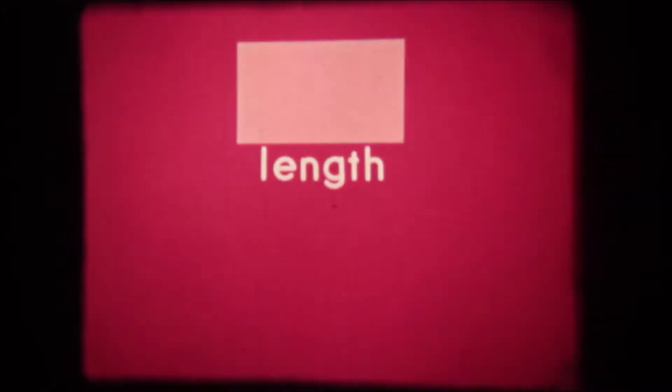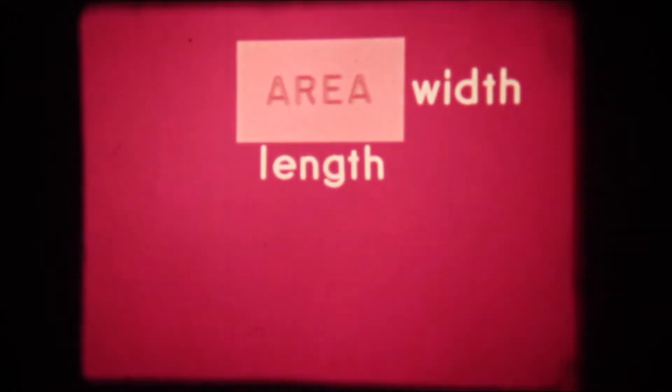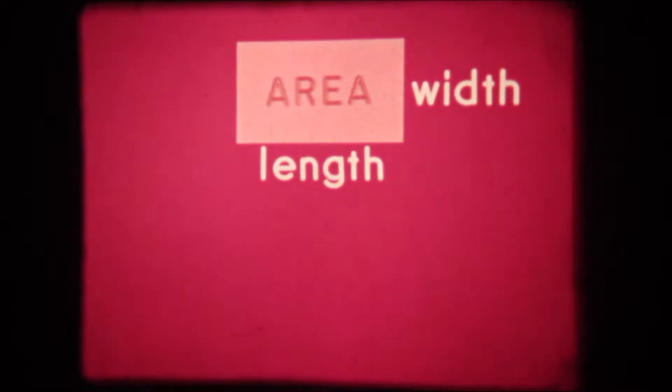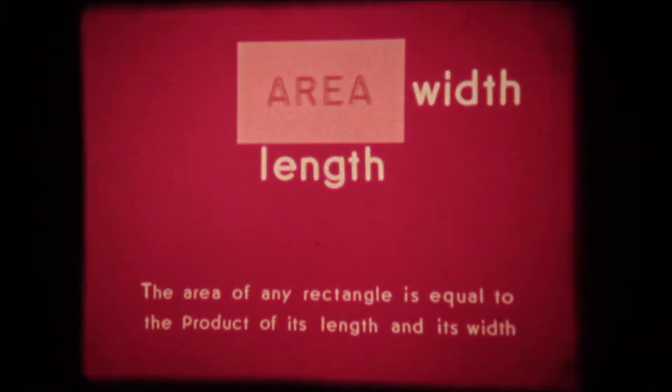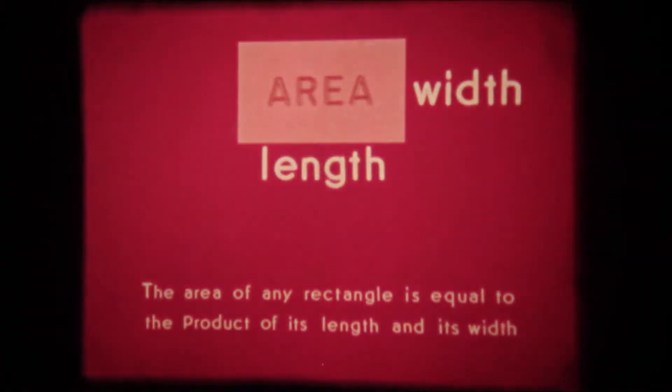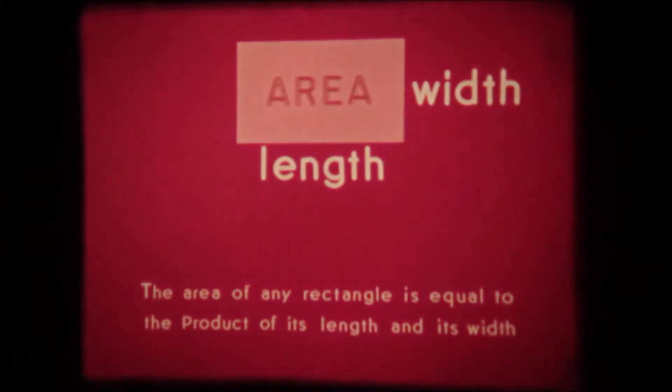Here is a rectangle with a length measured in any convenient units you wish and a width measured in the same units and an area measured in squared units of the same kind. There is a relationship between the length and the width and the area of a rectangle which is given by the statement: the area of any rectangle is equal to the product of its length and its width.